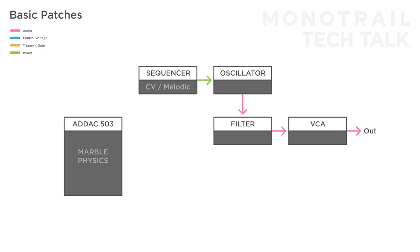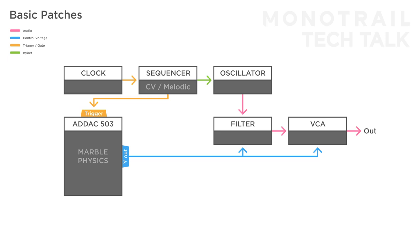Here is a similar concept with a single voice. Only this time a semi-random clock is used to advance a sequencer tuning the voice and gating Marble Physics. The Y out is used again to open the filter and VCA. But this time the X axis isn't locked, and the X output is used to modulate the filter resonance. The way the knobs are set can make drastic changes to the generated signals — from slow and mellow to fast and hectic.